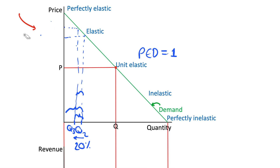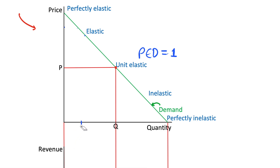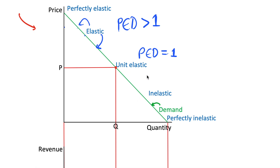So as we move up our demand curve, we see that this part of the curve is elastic — anything above the unit elastic midpoint has a PED greater than 1, which is what we define as elastic. Below the midpoint, demand is inelastic, so the price elasticity of demand is between 0 and 1 — ignoring the minus sign, though PED is usually a negative amount.